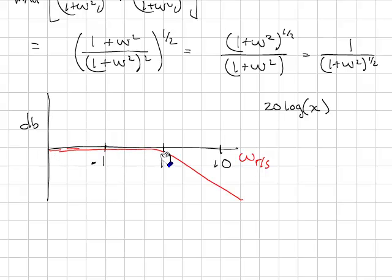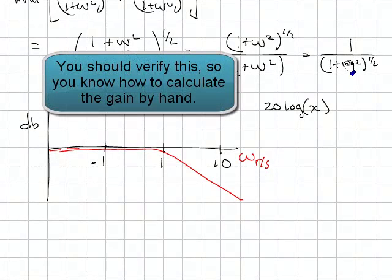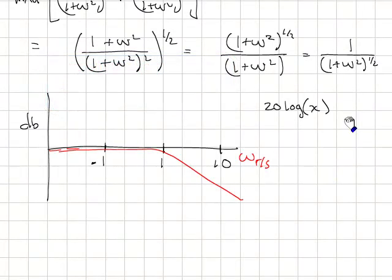Almost a straight line and almost a straight line. You should convince yourself that this is what the plot looks like. This is just a matter of taking values of frequency, plugging them in, cranking through the math and plotting the values.